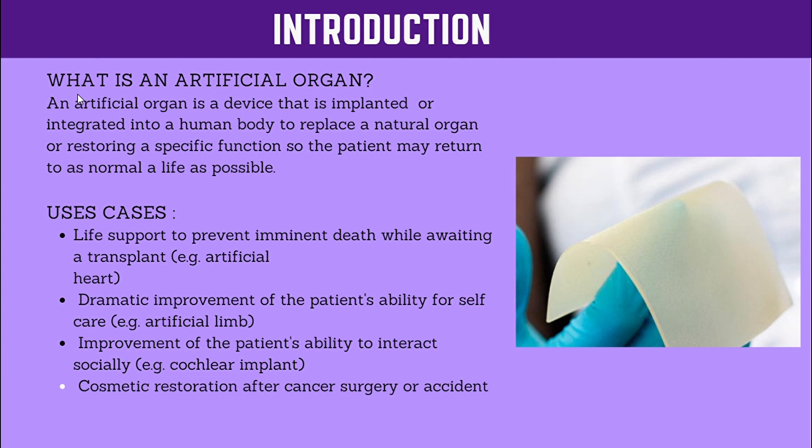Another use case is a dramatic improvement of the patient's ability for self-care, using artificial limbs for joint movements for those who do not have legs. For those patients, they provide artificial joints, legs, hands, and many more things. Also, improvement of the patient's ability to interact socially — these artificial organs may not have the exact same functionality, but you can socially interact with them. If you have artificial hands, you can touch and feel the senses.